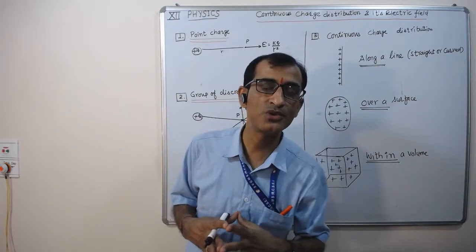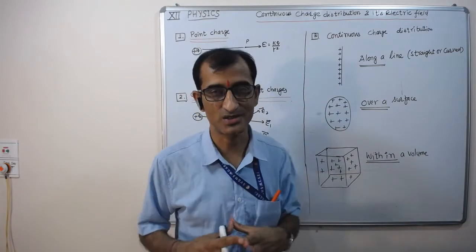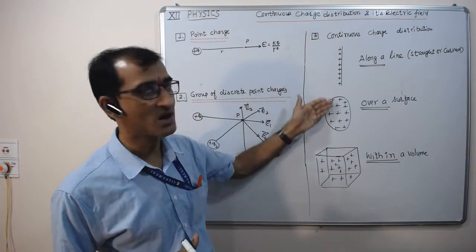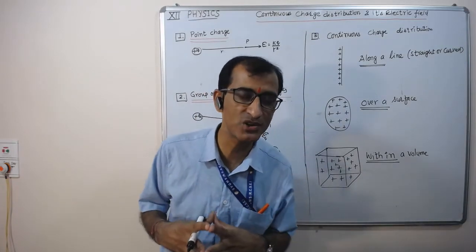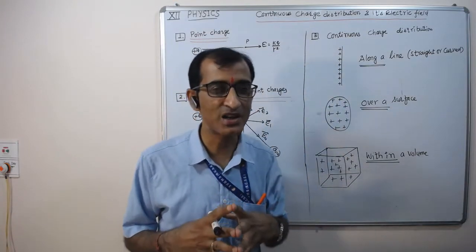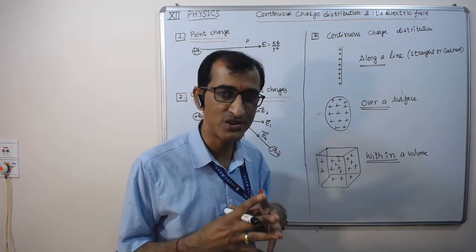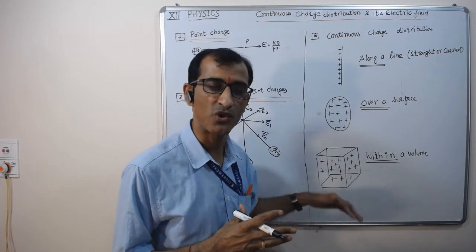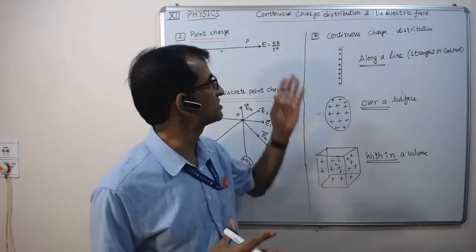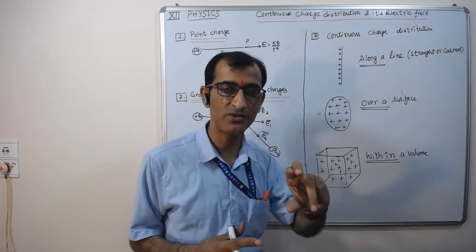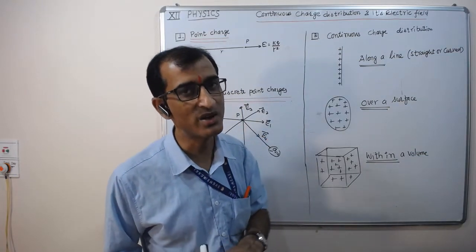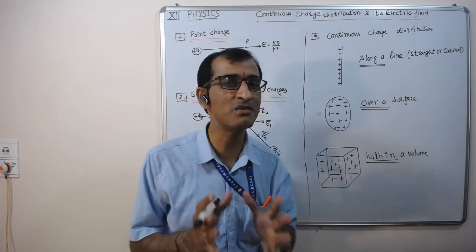In continuous charge distribution, we use the term charge density rather than charge. To find the electric field of such a distribution, we cannot use Coulomb's equation directly because these are not point charges — Coulomb's law is applicable only for point charges. So we divide the charge into small, infinitesimal elements — length, area, or volume elements. The charge in each element behaves like a point charge, and using vector and calculus mathematics, we can determine the total electric field.